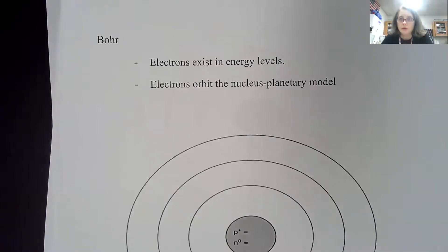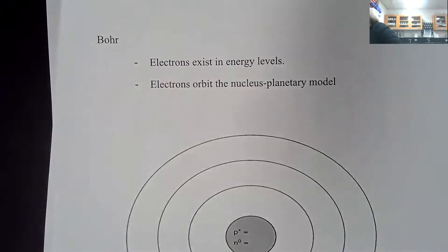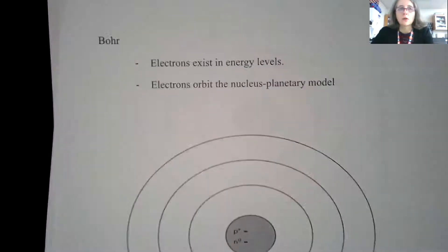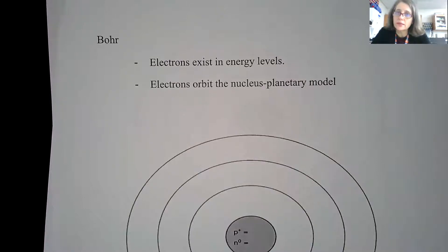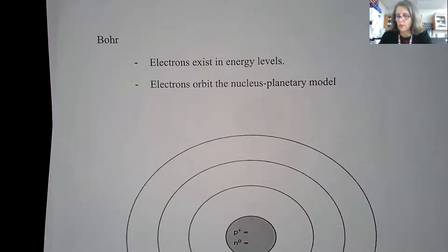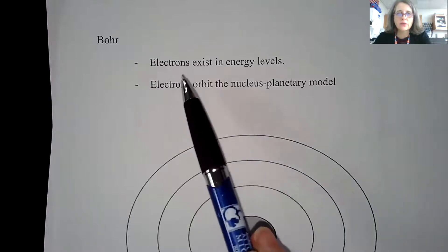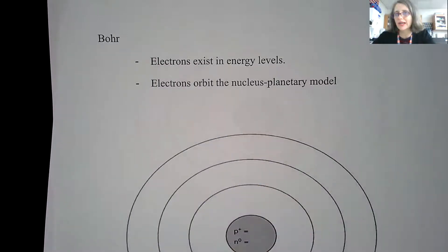This video is going to focus on what we call the Bohr model and how this pertains to our trends on the periodic table. At this point in time, science knew from Rutherford's experiment that we had a small dense nucleus and then electrons were somewhere around that nucleus. What Bohr added to the model essentially is that electrons exist in energy levels.